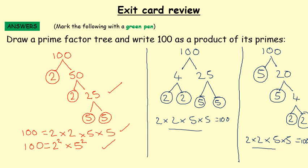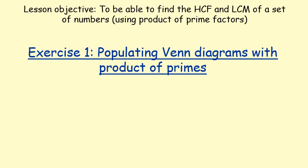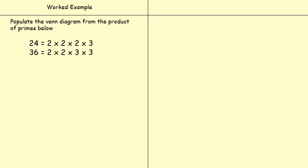Another thing I wanted to say is: write your product of primes in order of smallest numbers to biggest — so two times two times five times five — it just makes it easier to see what's happening. So we're going to go over a couple of key terms. For exercise one, we're going to be populating Venn diagrams with the product of primes already given. So if you're not confident on factor trees but you feel confident about Venn diagrams, you're going to do great on this. Our key terms: the highest common factor — HCF — and LCM, lowest common multiple. So we're going to go through a couple of examples of what we're going to do in the next exercise. We want to populate a Venn diagram from the product of primes below.